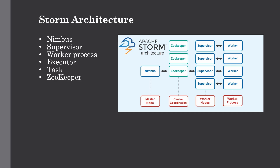Then ZooKeeper comes into the picture. ZooKeeper is a service used by the cluster for coordination between nodes and for maintaining shared data with robust synchronization techniques. Since Nimbus is stateless, it depends on ZooKeeper for monitoring worker node status. ZooKeeper also helps supervise the interaction with the master node Nimbus and is responsible for maintaining the state of both Nimbus and the supervisors. This is how ZooKeeper fits into the Storm architecture.